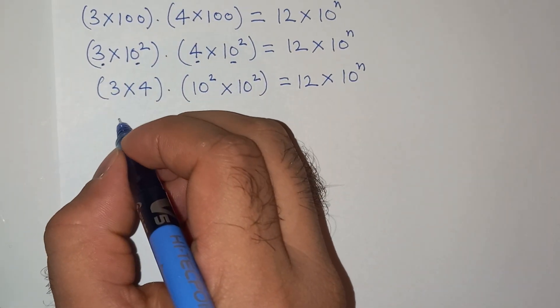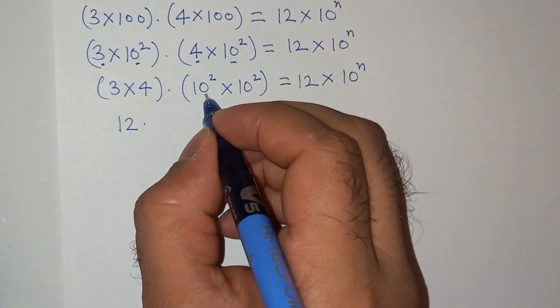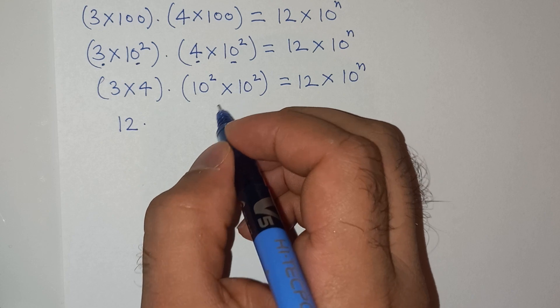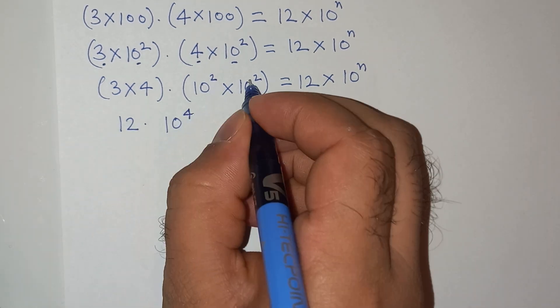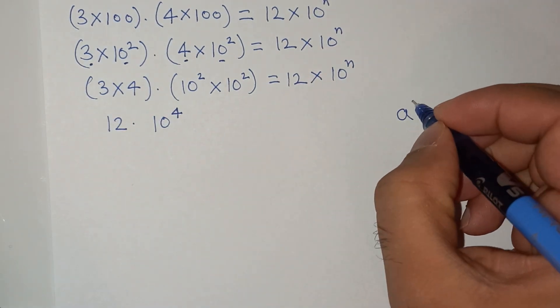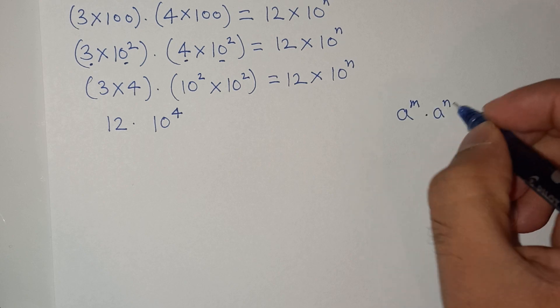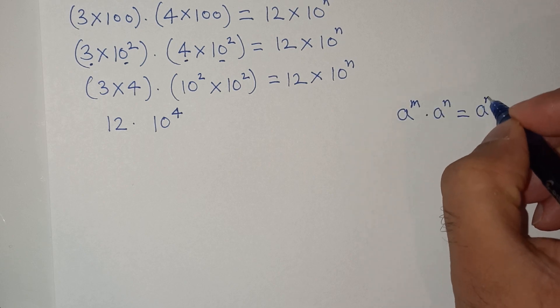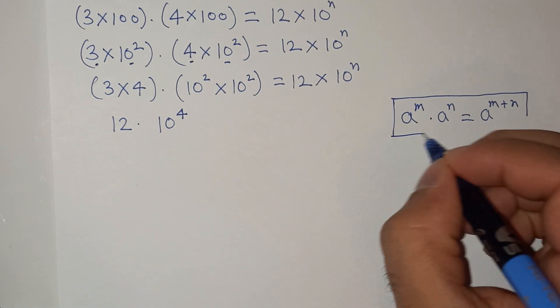Now we know that 3 multiplied by 4 is 12, and 10 square multiplied by 10 square will be 10 power 4, 2 plus 2 equals 4, as per this exponential rule which is a power m multiplied by a power n equals a power m plus n. We all know about this exponential rule.